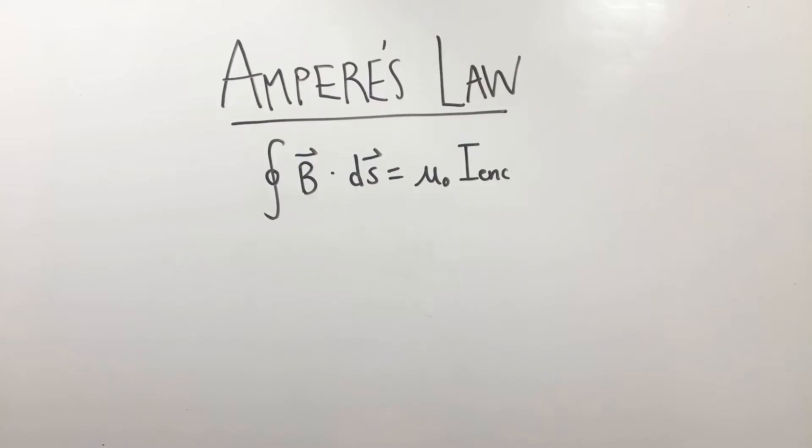Ampere's Law states that the loop integral of the dot product between the magnetic field and loop infinitesimals equals mu naught times the current enclosed by the loop, where mu naught is the permeability of free space which has a value of 4π × 10^-7.